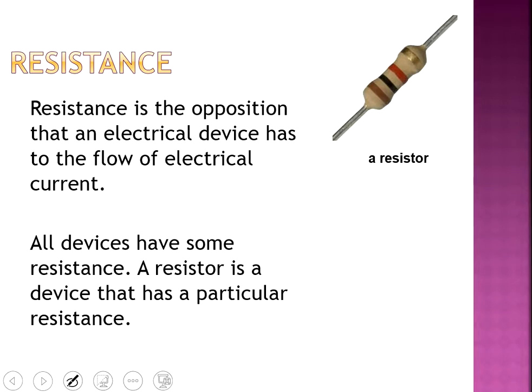What we typically have for resistance is something called a resistor. Every device provides some sort of resistance. The light bulb provides resistance, the bell provides resistance. Even the wire itself provides a little bit of resistance. But something that we use to control resistance is this guy right here, the resistor.